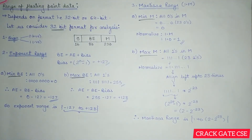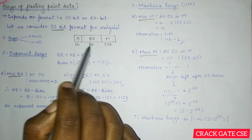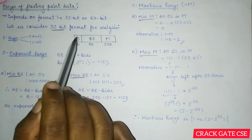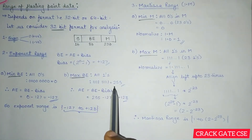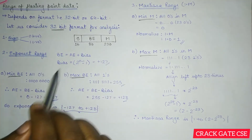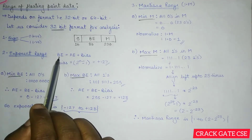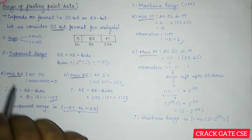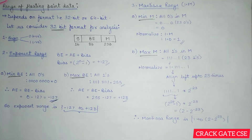We check two extreme conditions: minimum and maximum. The minimum value of the biased exponent is all zeros — eight zeros — which equals 0. The maximum is all ones — eight ones — which equals 255. For the minimum biased exponent, the actual exponent = 0 - 127 = -127. For the maximum, the actual exponent = 255 - 127 = 128. So the exponent ranges from -127 to 128.